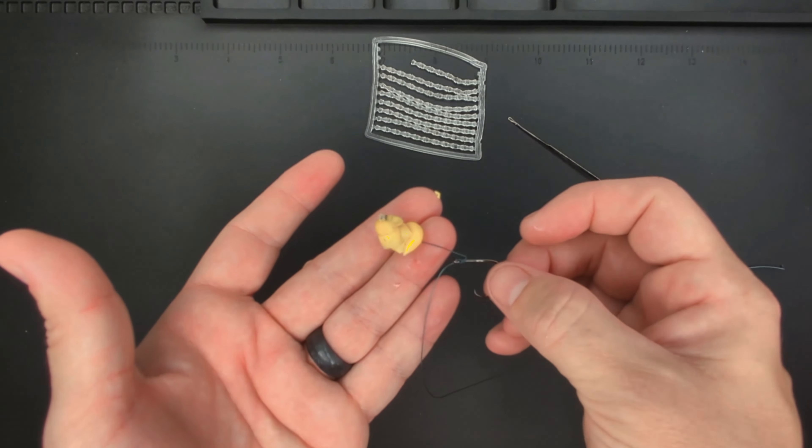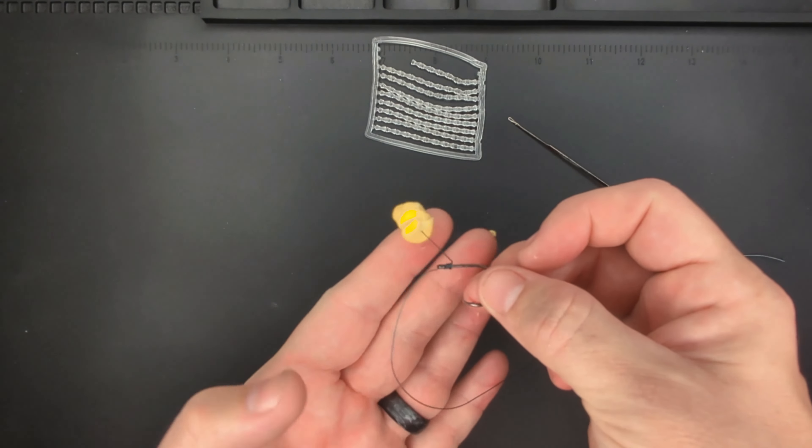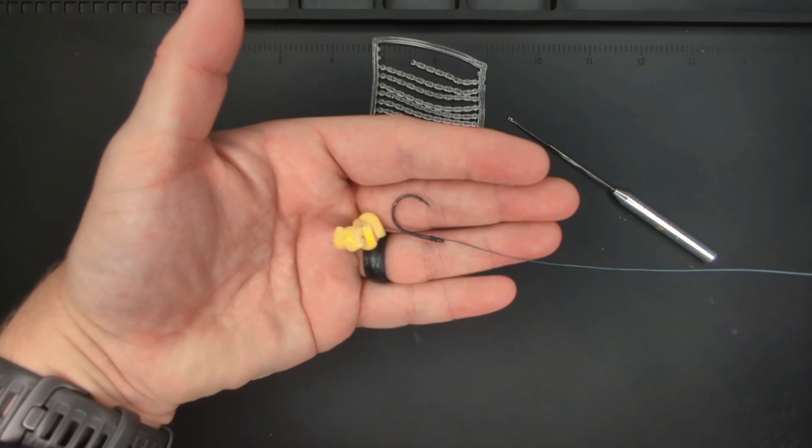That bait keeper is going to hold that bait on the line. Right there is your fully baited hair rig.